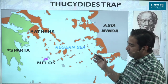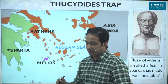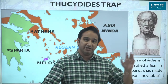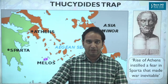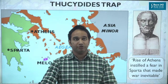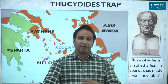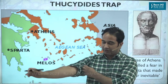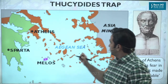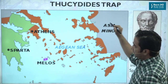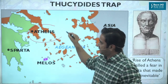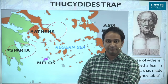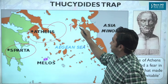Because the Thucydides Trap has been continuously used for the past few years — in reference to the Russia-Ukraine war and now also in reference to India and China — it furthermore becomes important for your PSIR examination. During the time Thucydides wrote, there were two main powers: Athens and Sparta. Sparta was the dominant power and Athens was the rising power.